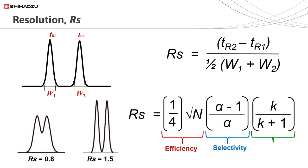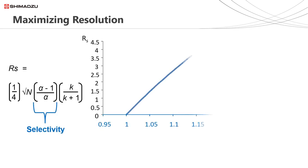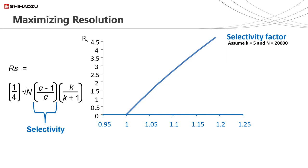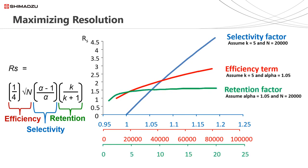The equation for resolution demonstrates how efficiency, selectivity and retention all contribute. Selectivity has the largest influence on resolution at higher values. As we looked at in session two, separation or selectivity can be changed by switching stationary phase, mobile phase, pH and temperature. Efficiency also has a large influence, but because of the square root term, doubling the efficiency only increases resolution by 1.4 times. Increasing efficiency involves minimising the effect of band broadening in our columns. Retention only has an influence on increasing resolution at lower values — ideally the retention factor should be greater than 2 and less than 10. Beyond 10, it has no further influence on increasing resolution.